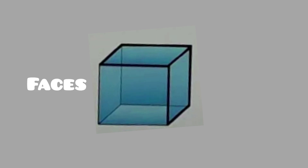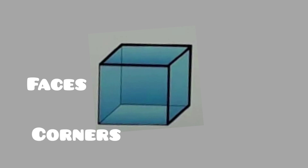A cube has faces, edges, and corners. It has one, two, three, four, five, and six faces. Now let's count the corners. Corners are also called vertices. It has one, two, three, four, five, six, seven, and eight corners — that means eight vertices.